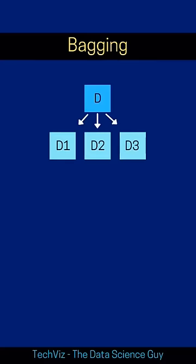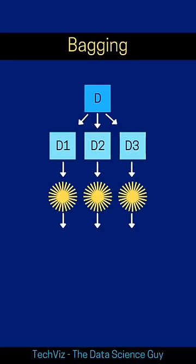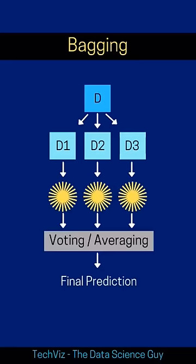So now talking about bagging, we start off by making multiple copies of the data — this could be with or without replacement — and train ML models independently on each of them, and then finally merge the predictions by all of them by considering either maximum voting or averaging scenario in case of classification or regression.